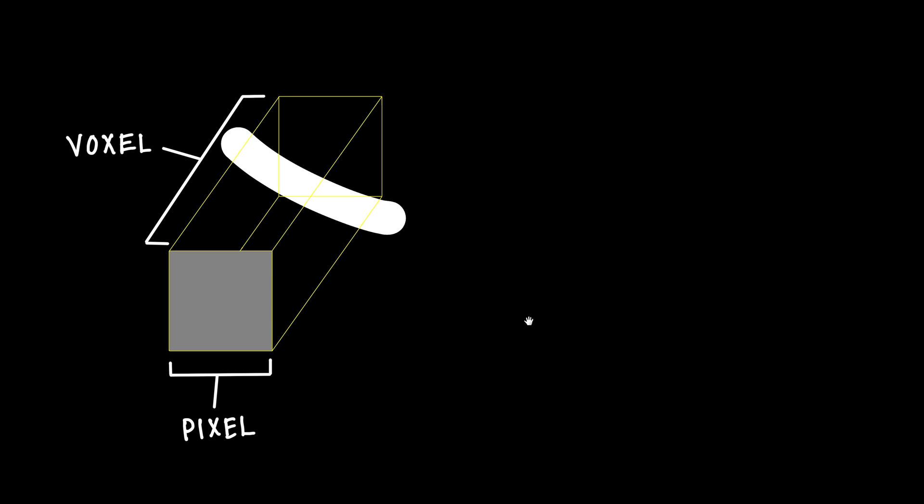A pixel is a two-dimensional square that you see on your computer screen. For CT, a pixel is a shade of gray between white and black. But that pixel is actually a representation of a three-dimensional structure called a voxel. For CT, a voxel has a third dimension along the z-axis of the patient, and that third dimension is the slice thickness.